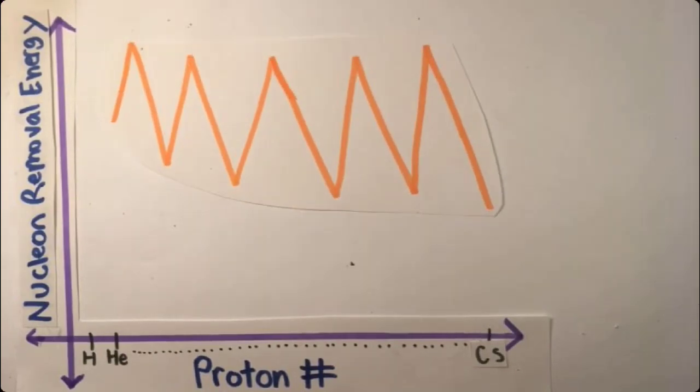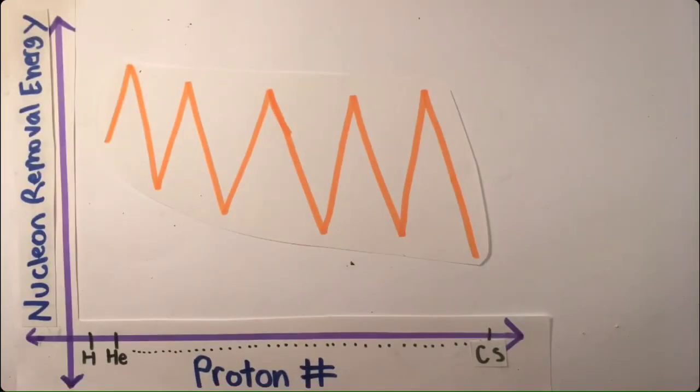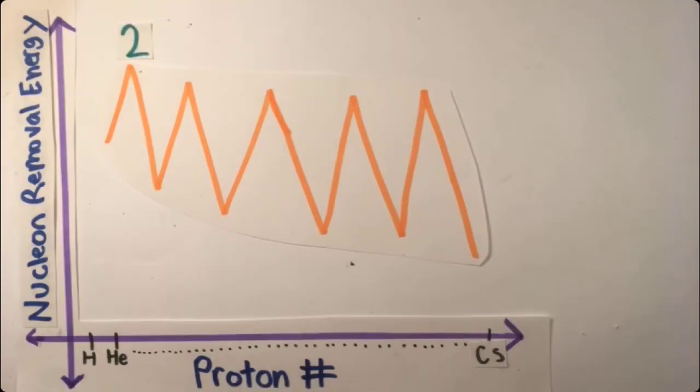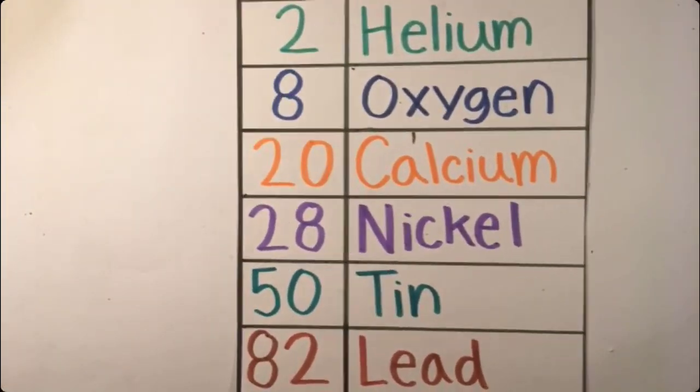Now, let's go back to the graph of the energy it takes to remove a nucleon versus time. Whereas in the electrons, the highest points were correlated with the noble gases, in the nucleus, the peaks correlate with the elements with protons that match the magic number. So, the peaks occur at helium, oxygen, calcium, nickel, tin, and lead.